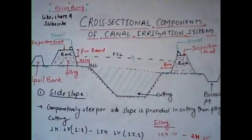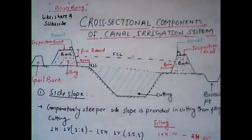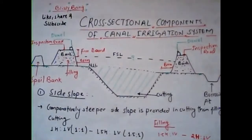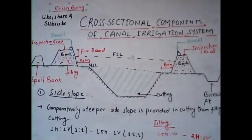The first cross-sectional element is the side slope. The side slope should be such that it is stable, depending upon the type of soil. Comparatively steeper slopes can be provided in the cutting section as compared to the filling section, since the soil in the cutting section is more stable.